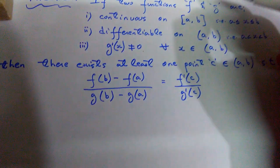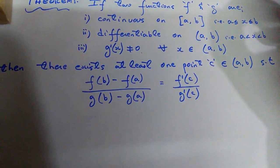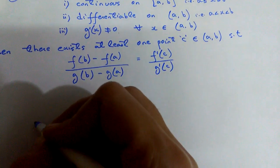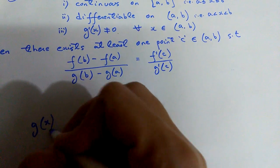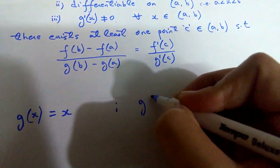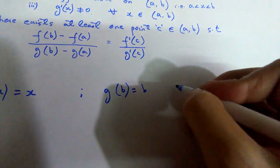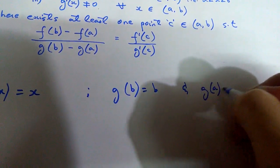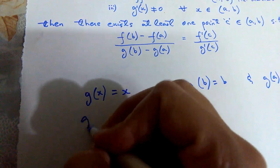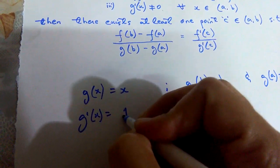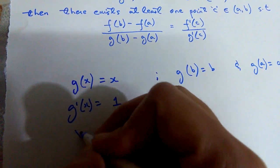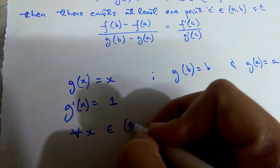Cauchy's Mean Value Theorem explains Lagrange's Mean Value Theorem as follows: if I say that the function g is defined as a unit function — g(x) = x — then at point b, g(b) equals b, and at point a, g(a) equals a. If you take the derivative of this function with respect to x, g'(x) is going to be 1 for all x belonging to the open interval (a, b).